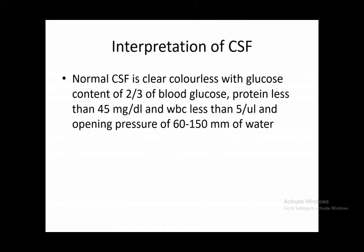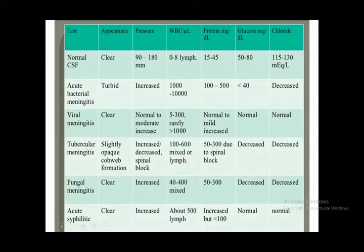Normal CSF is clear and colorless with a glucose content of around two-thirds of blood glucose, protein of 45 mg/dL or less, and WBC count ideally less than 5 per microliter. Opening pressure of CSF is around 60 to 150 mmH2O. In the comparison table, normal CSF has pressure around 90 to 180 mmHg, WBC count 0 to 8, protein 15 to 45, and glucose 50 to 80 depending on blood glucose level.